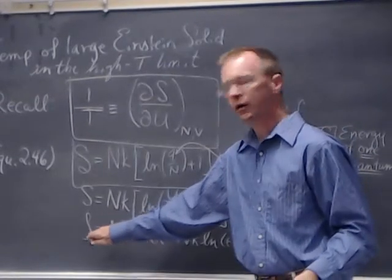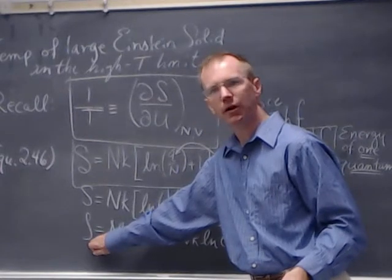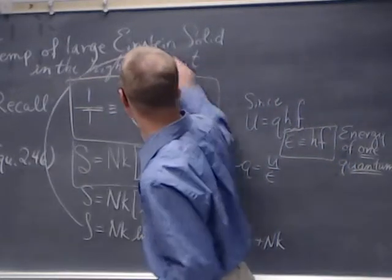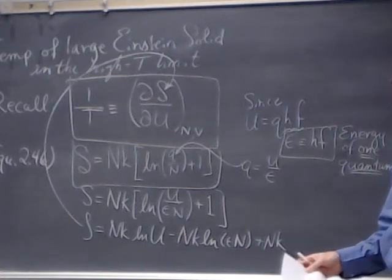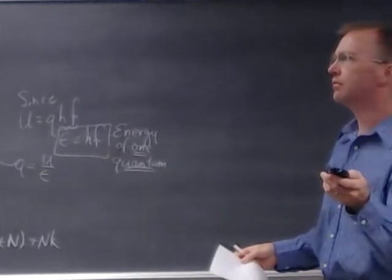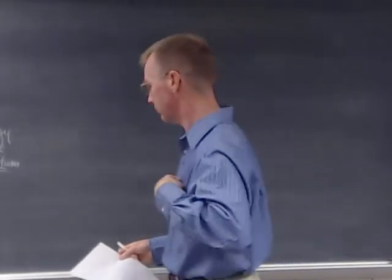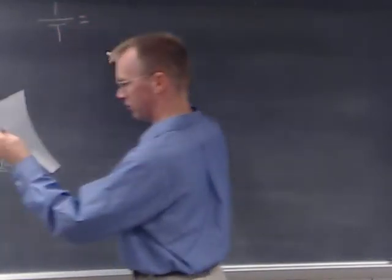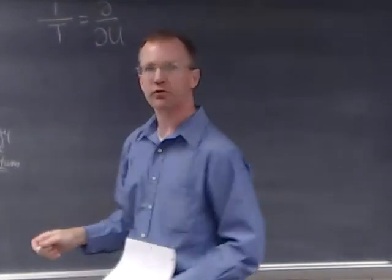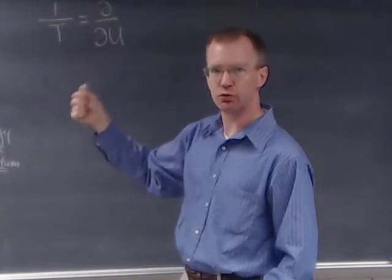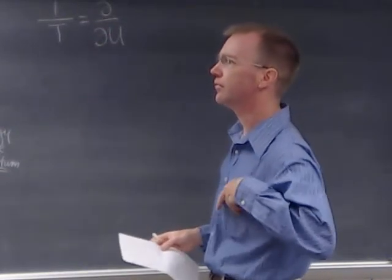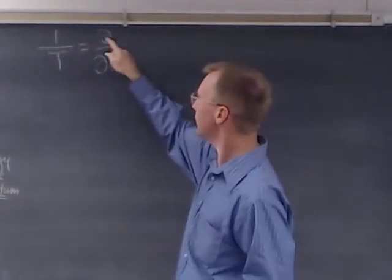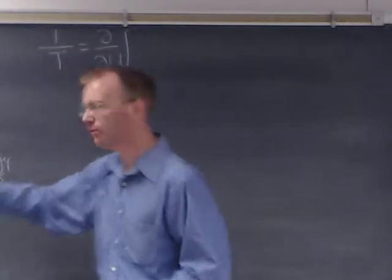Now I have an equation for the entropy of our Einstein solid, and I want to find the temperature. So I'm going to put S into this formula for temperature. One over T equals the partial derivative of S with respect to U, with N and V held constant.